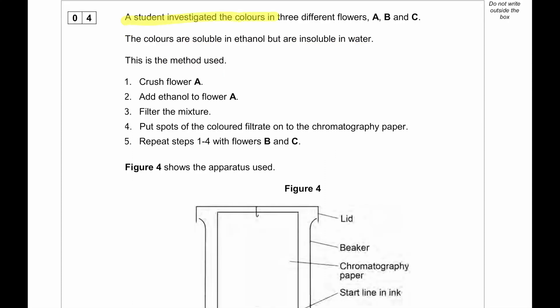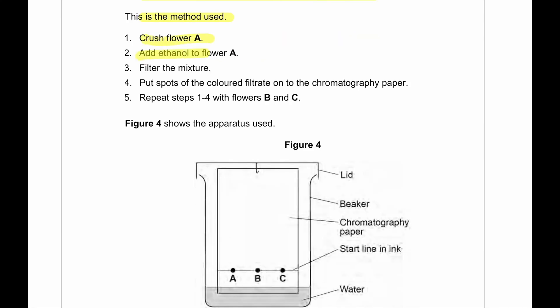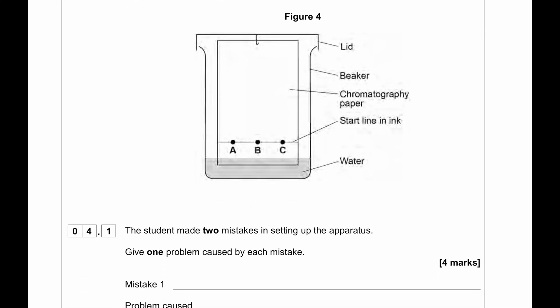A student investigated the colors in three different flowers A, B, C. The student used the method. The colors are soluble in ethanol but are insoluble in water. So ethanol must be used as a solvent by the way. Crush flower A, add ethanol to flower A, filter the mixture, put spots of colored filtrate on the chromatography paper, repeat steps 1 to 4 for flowers B and C and then run the chromatogram.